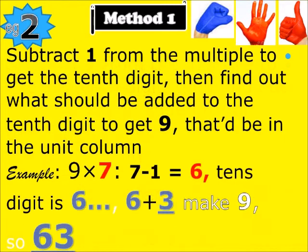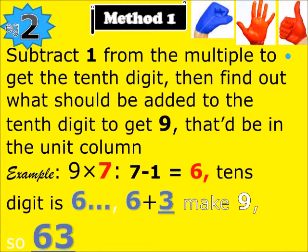Nine times seven: seven minus one is six. So you ask yourself, what number should be added to six to get nine? That is three. So the answer is sixty-three.